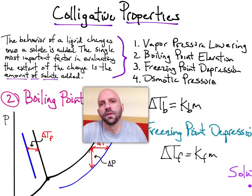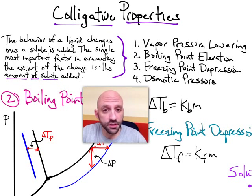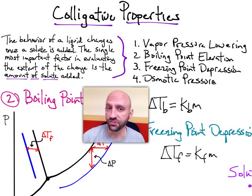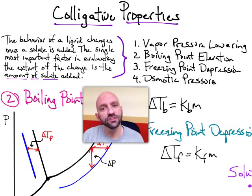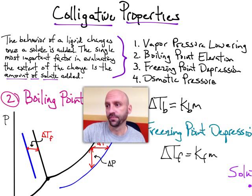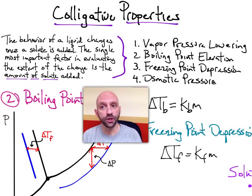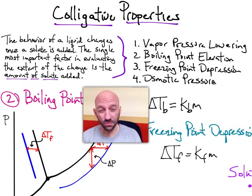Hello everybody. Welcome to our next set of videos where we're going to talk about the colligative properties of solutions. In the previous video I showed you a demonstration of one of those colligative properties, namely boiling point elevation. There are four different types of colligative properties that we're going to discuss: boiling point elevation, vapor pressure lowering, freezing point depression, and osmotic pressure.